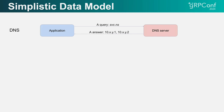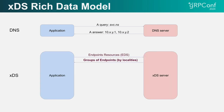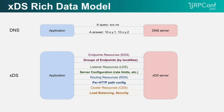A records in DNS have a very simplistic data structure — there's only so much an application can do with that. XDS gives you a much richer data model. You can start grouping endpoints by locality, give them priorities, weights, metadata, and more. There's also a bunch of other resources you can deliver through XDS that lets you configure other aspects of data plane load balancers.